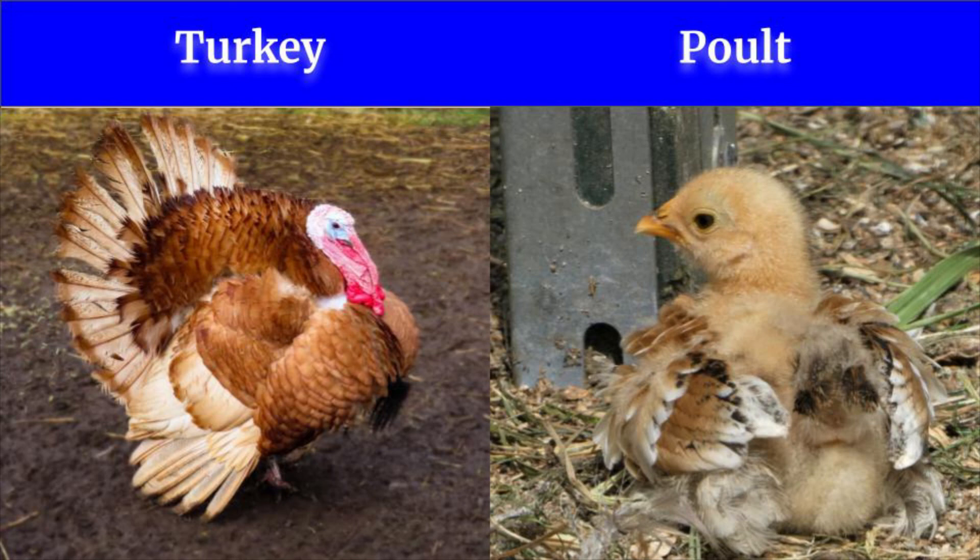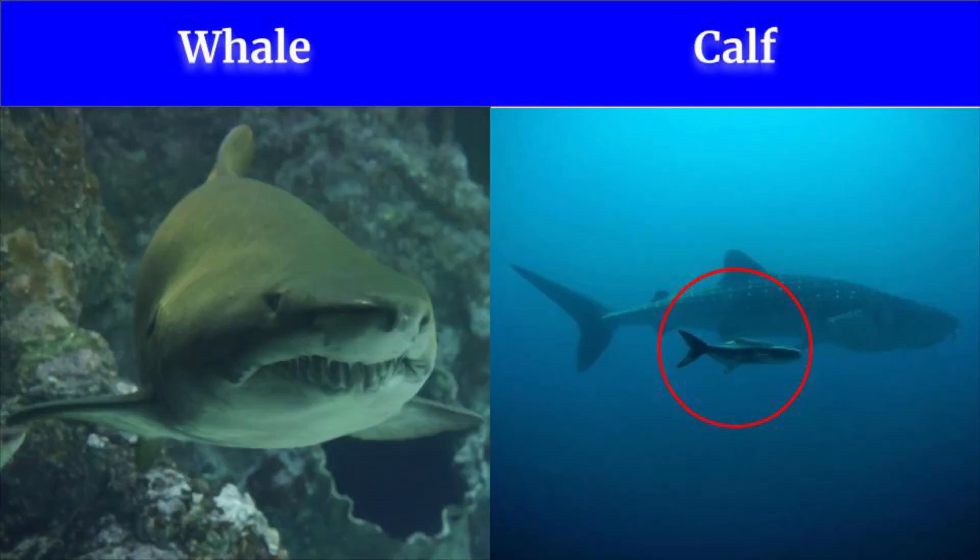This is a turkey and its baby poult. The young ones of turkey are called poult. This is a whale and its baby calf. The young one of a whale is called calf.